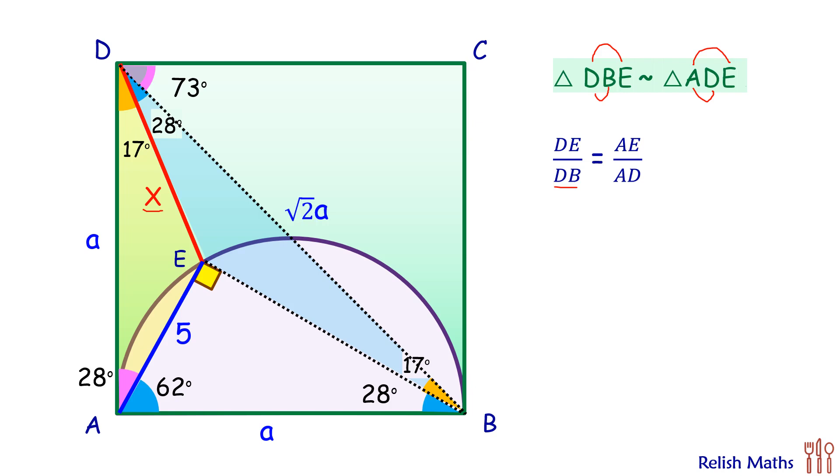So putting these values, DE is x and DB is √2a. This equals AE upon AD. Now AE is 5 centimeters, which is given, and AD is the side of the square, which is a centimeters. So solving it here, both the a's will get cancelled down, and we get the value of x as 5√2 centimeters.